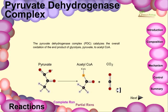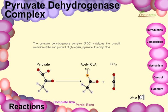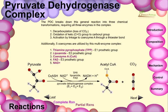The pyruvate dehydrogenase complex catalyzes the overall oxidation of pyruvate, the end product of glycolysis, to acetyl-CoA, with the generation of carbon dioxide. The PDC breaks this general reaction into three chemical transformations requiring three enzymes: first, decarboxylation and loss of CO2; second, oxidation of a keto group to a carboxyl group; and third, activation by linkage to coenzyme A through a thioester bond provided by lipoyl acid. Additionally, five coenzymes are utilized by the multi-enzyme complex.